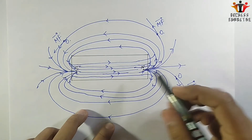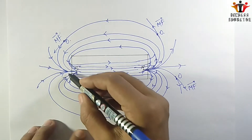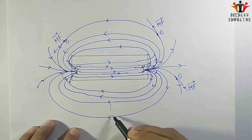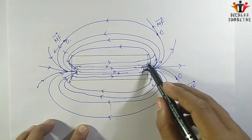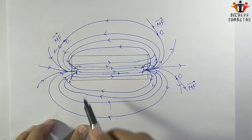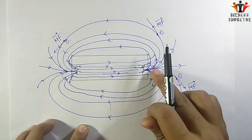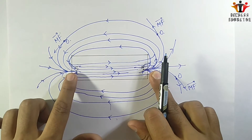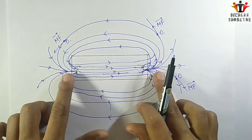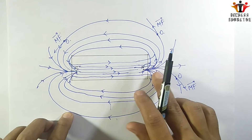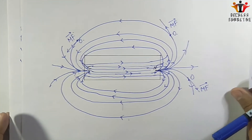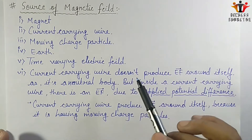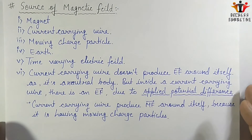As you move farther from the magnet, the magnetic field becomes weaker and weaker. But near the poles — the north and south poles — the density of field lines is greatest, so the magnetic field intensity is maximum at the poles.